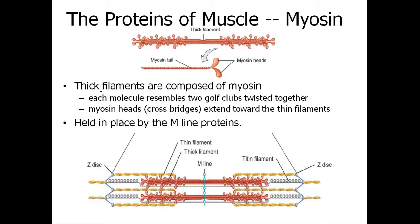Myosin: you've got the thick myosin filament — it's a big chunky structure — and you've also got the myosin heads, which are going to use that ratchet mechanism for contraction. The thick filaments are composed of two golf clubs twisted together, forming cross bridges that extend towards the thin filaments. They're held in place by the M-line proteins, with Z-discs denoting one sarcomere.